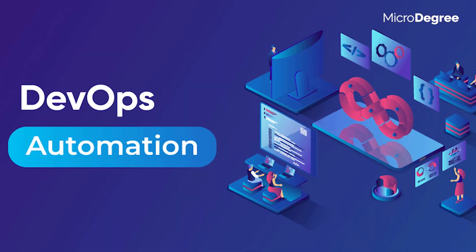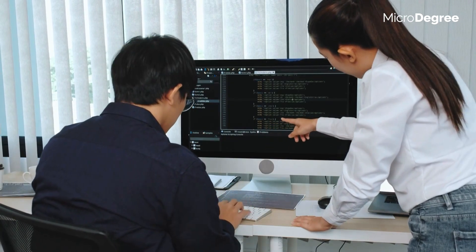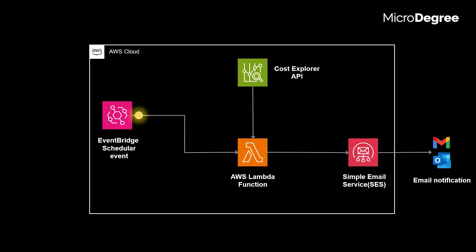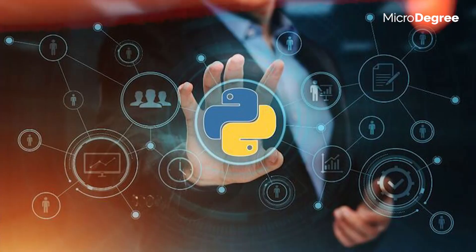Next one is DevOps Automation Engineer. As an automation engineer, you have to automate work with the CI/CD pipeline. The automation requires you to write code and use a scripting language, more preferably Python.